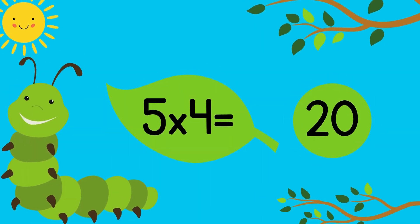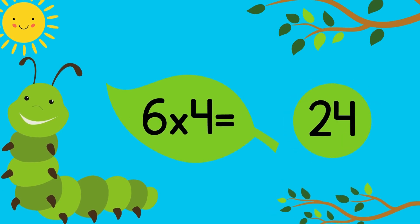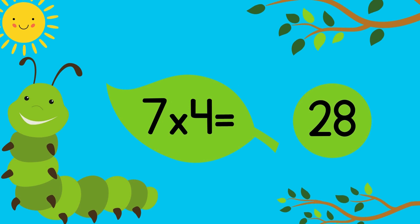5 times 4 equals 20. 6 times 4 equals 24. 7 times 4 equals 28.